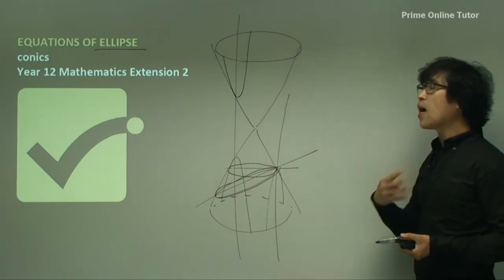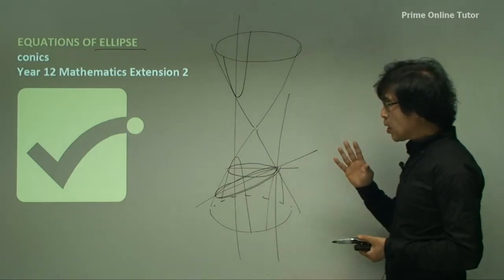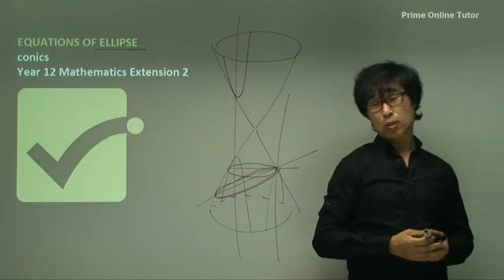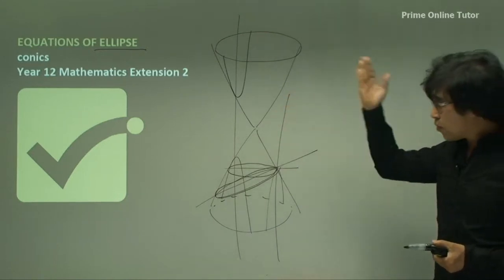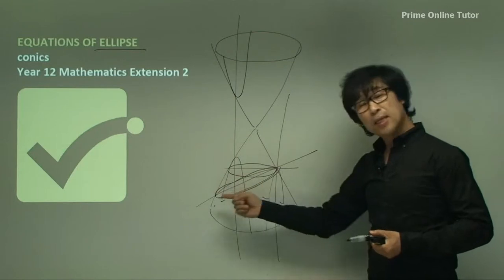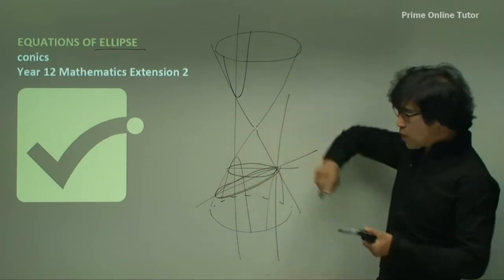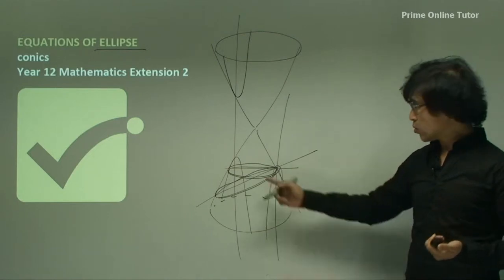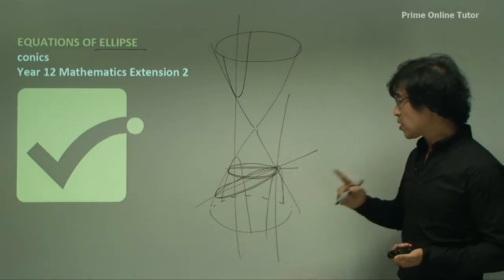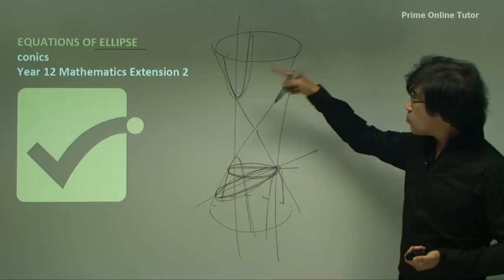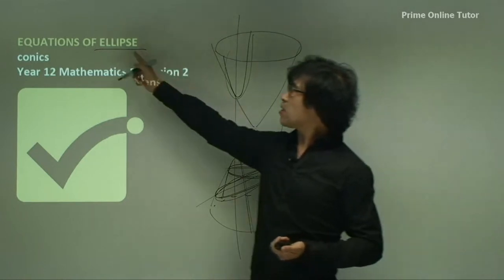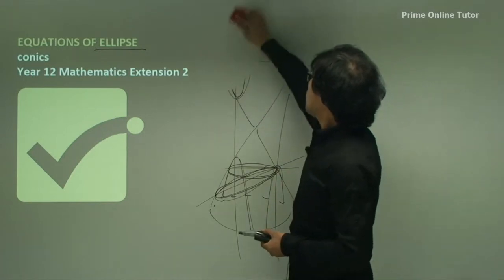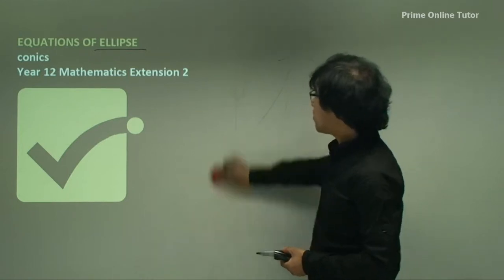Those four shapes all come from cones, so that's why we call them conics. The topic called conics from this lesson will cover the ellipse and the hyperbola. We've already covered circles and parabolas, so we won't cover those two shapes in this lesson. We will be covering the hyperbola and the ellipse, and this lesson will specifically focus on the ellipse.